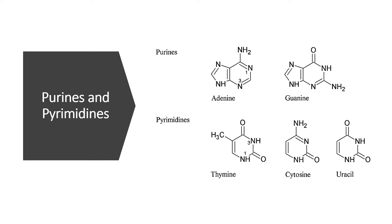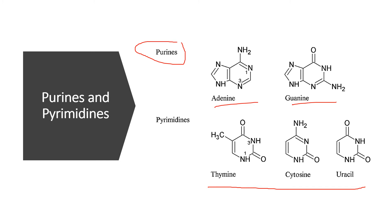Adenine, guanine, thymine, cytosine, and uracil fall under two key groups. You have the purines — adenine and guanine — which have two ring structures. And then the pyrimidines — thymine, cytosine, and uracil — which only have one ring structure. Questions in CIE past papers often ask students to identify whether they are looking at a pyrimidine or a purine, so it is important to know the difference. Pyrimidines all have at least one double-bonded oxygen: uracil and thymine have two, cytosine has one. Of the purines, only guanine has that feature.